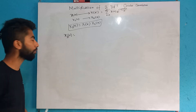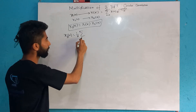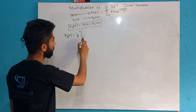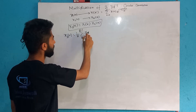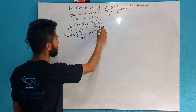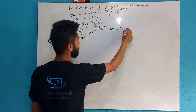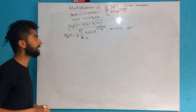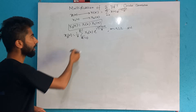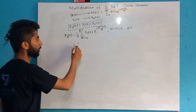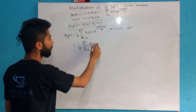This is the inverse DFT form. x3[m] equals 1 by N, summation k equals 0 to N minus 1, X3[k] e to the power j 2 pi k m by N, where m runs from 0 to N minus 1. The x3[m] signal is obtained by inverse DFT of X3[k]. And x3[m] equals 1 by N, summation k equals 0 to N minus 1, X3[k] which equals X1[k] into X2[k].